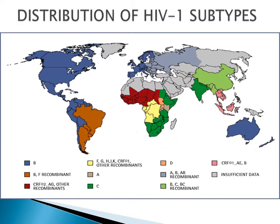A global map shows the distribution of different subtypes. Europe and North America show a single dominant subtype B, and the same in Australia. But in Africa, you see a wide diversity — subtypes C, A, D, G, F, and many others — reflecting the beautiful color complexity of Africa on that map.